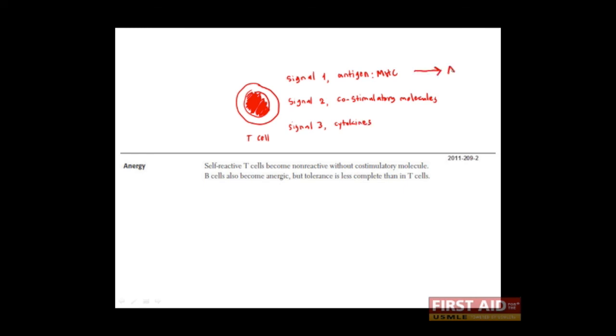Anergy occurs when only signal 1 is received by a T cell. This ensures that self-reactive T cells, which may not have been eliminated in the thymus, do not become activated and mediate autoimmunity. However, remember that the system is not perfect, and it's thought that self-reactive T cells might be activated inappropriately when an infection is occurring. You'll remember that co-stimulatory molecules are upregulated in antigen-presenting cells when they recognize pathogens. And it may be this inappropriate activation which might explain why some autoimmune diseases follow infections with certain pathogens.